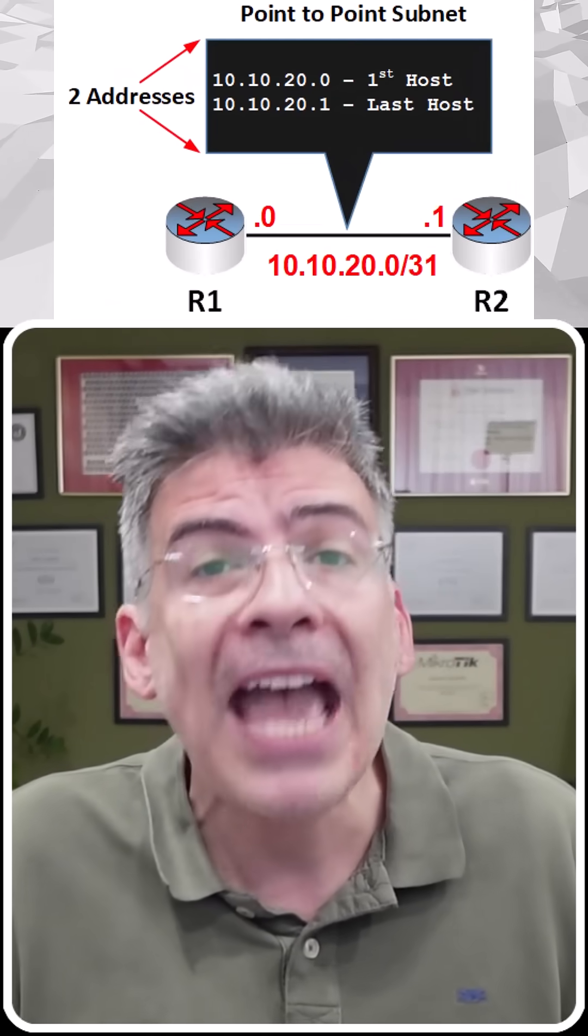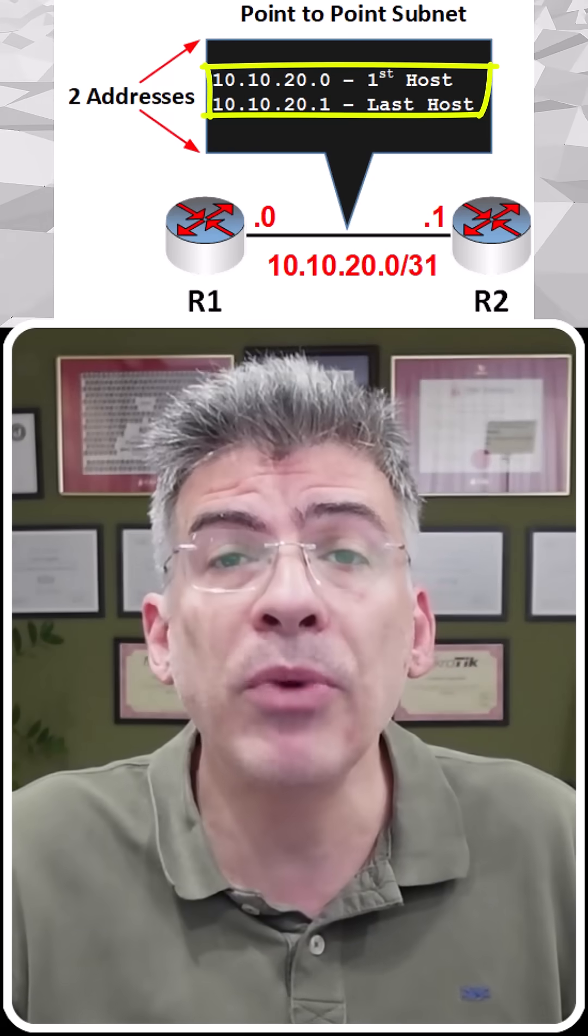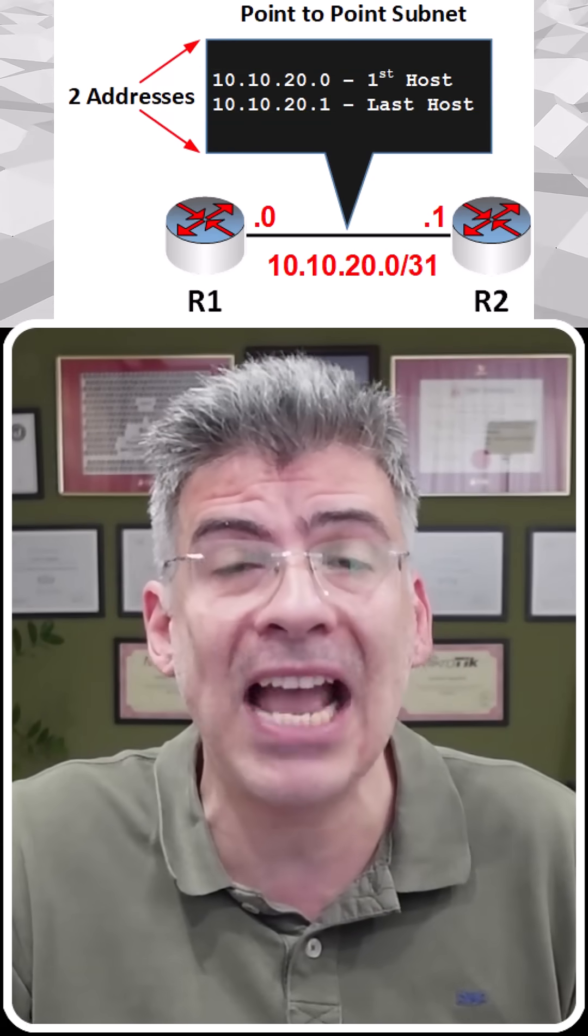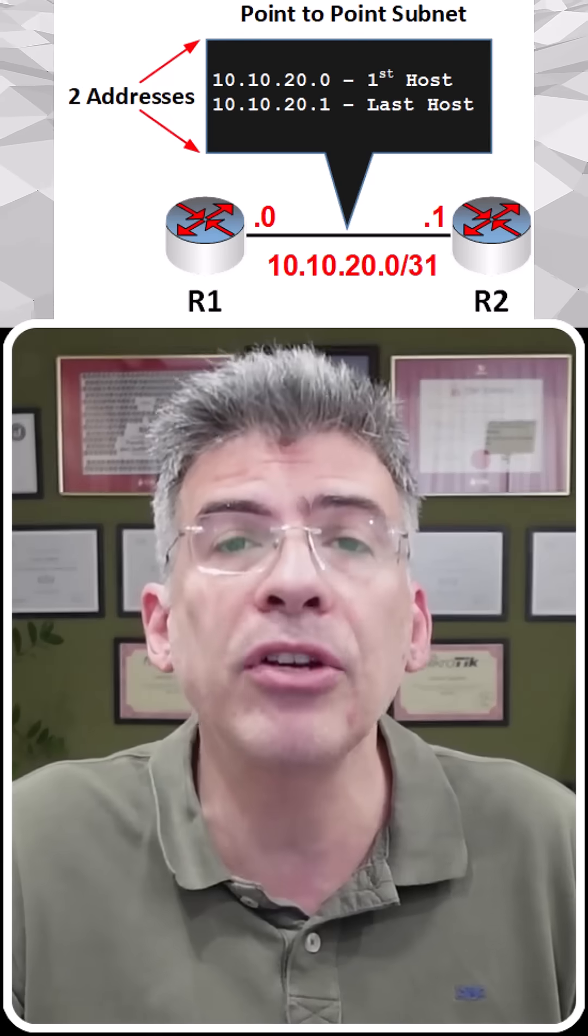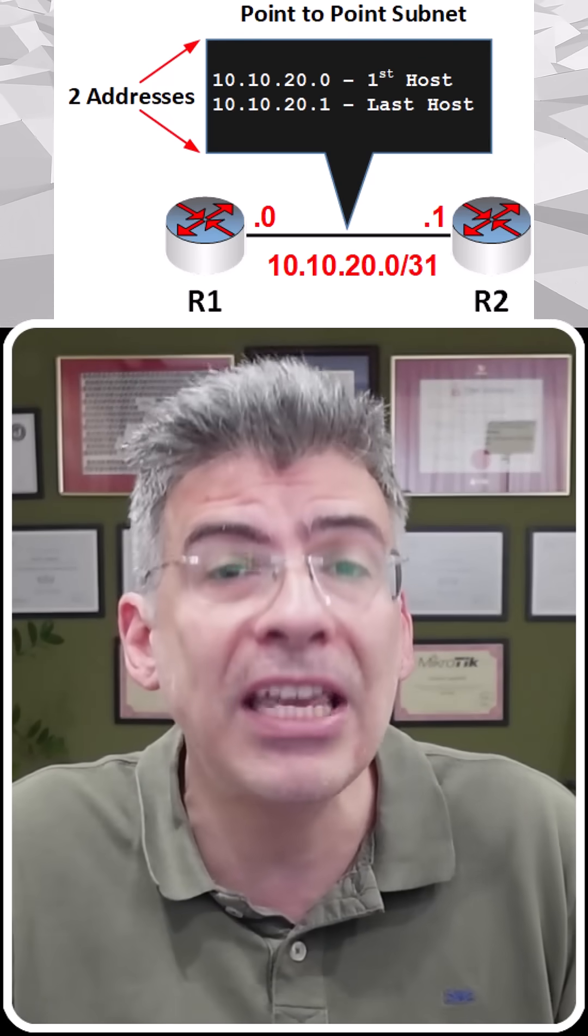For a subnet with two hosts, the idea of a broadcast address is eliminated. There's only one other host on the network segment, so both a unicast and a broadcast will do exactly the same thing.